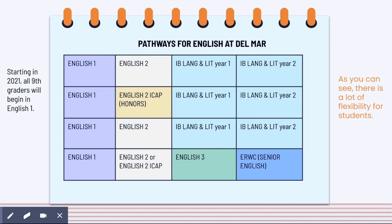There's a lot of flexibility for students in their English pathway. They can be in English 1, then regular English 2, then move straight into IB Lang and Lit Year 1 and Year 2. Or they can choose English 2 ICAP their sophomore year before going into IB Lang and Lit, or from either option go into English 3. All of our courses are college prep and UC and CSU approved. Our IB Lang and Lit course offers a grade bump each year, meaning an A receives 5 points rather than the traditional 4 when GPA is calculated.